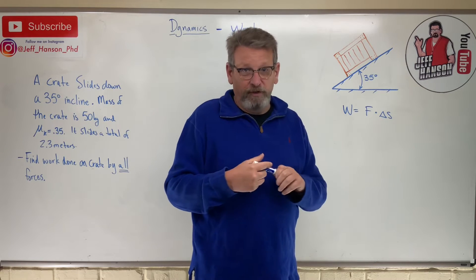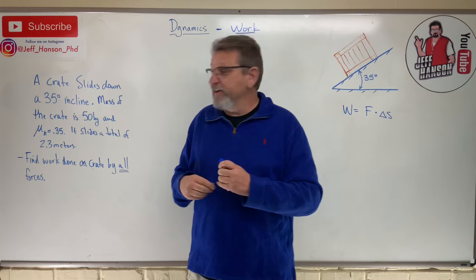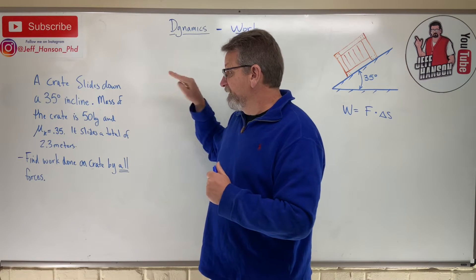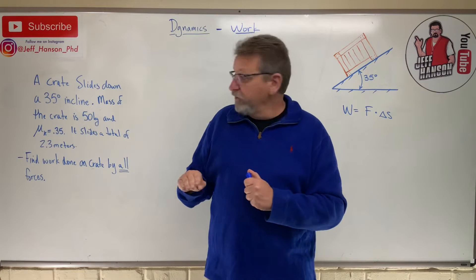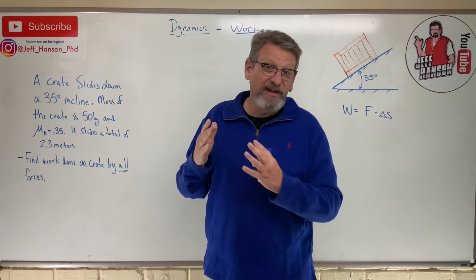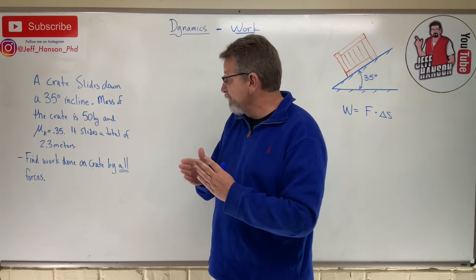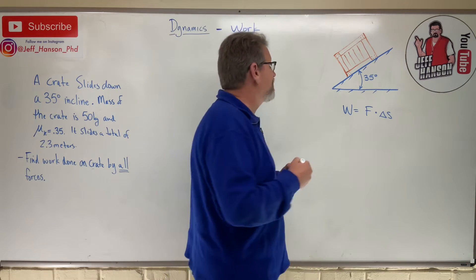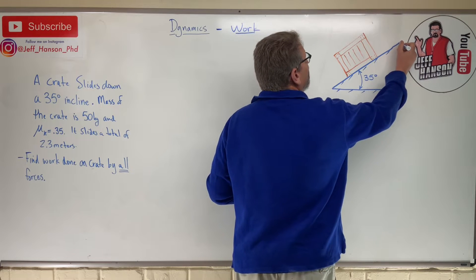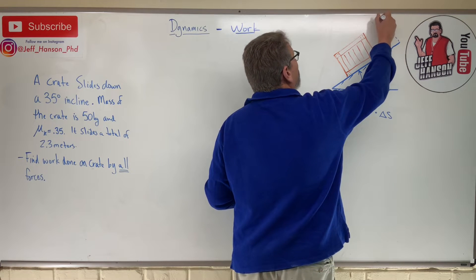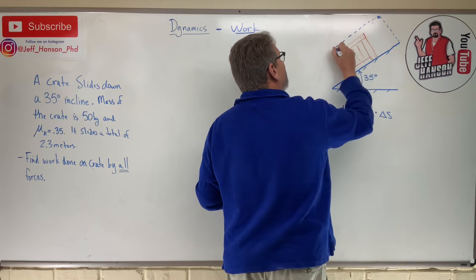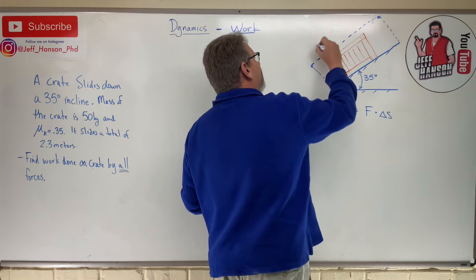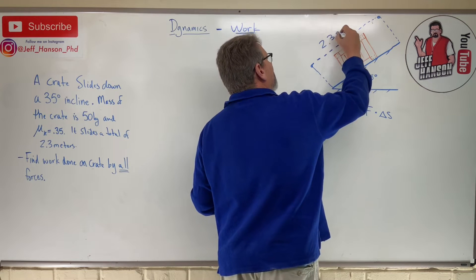Here's our problem: a crate slides down a 35-degree incline. The mass of the crate is 50 kilograms and mu sub k, the kinetic coefficient of friction, is 0.35. It slides a total of 2.3 meters — it started up here and slid down to here along the incline. We need to find the work done on the crate by all the forces.